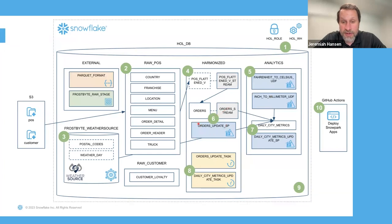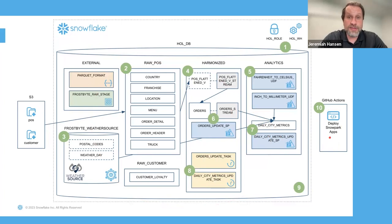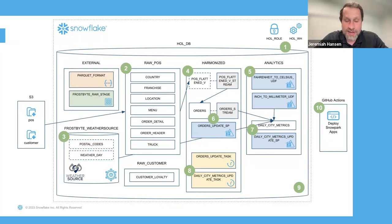We'll create a view against all of the point-of-sale tables and flatten it out, then create a stream on that, which is our change data capture mechanism. Starting in step five through the end, we'll build the pipelines: create user-defined functions in Python and SQL, build an orders table from the stream using a Python stored procedure, then build a daily city metrics table combining orders and weather data, orchestrate both stored procedures with a task, run the pipeline incrementally, and finally deploy with Snowpark through a CI/CD process with GitHub Actions.